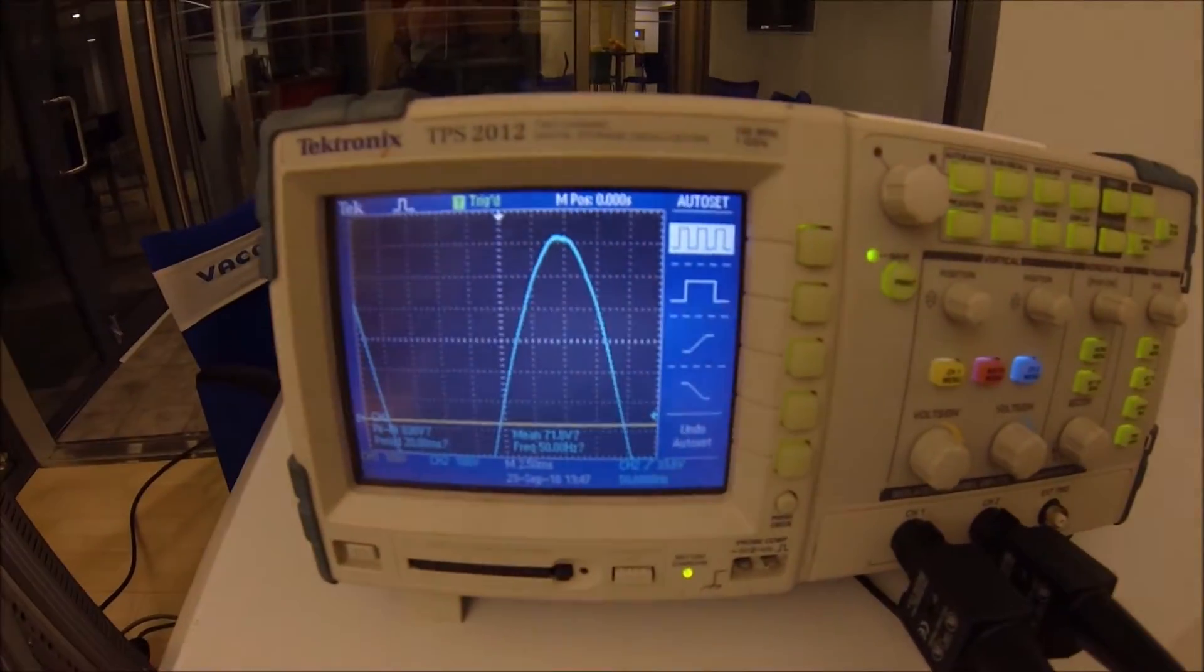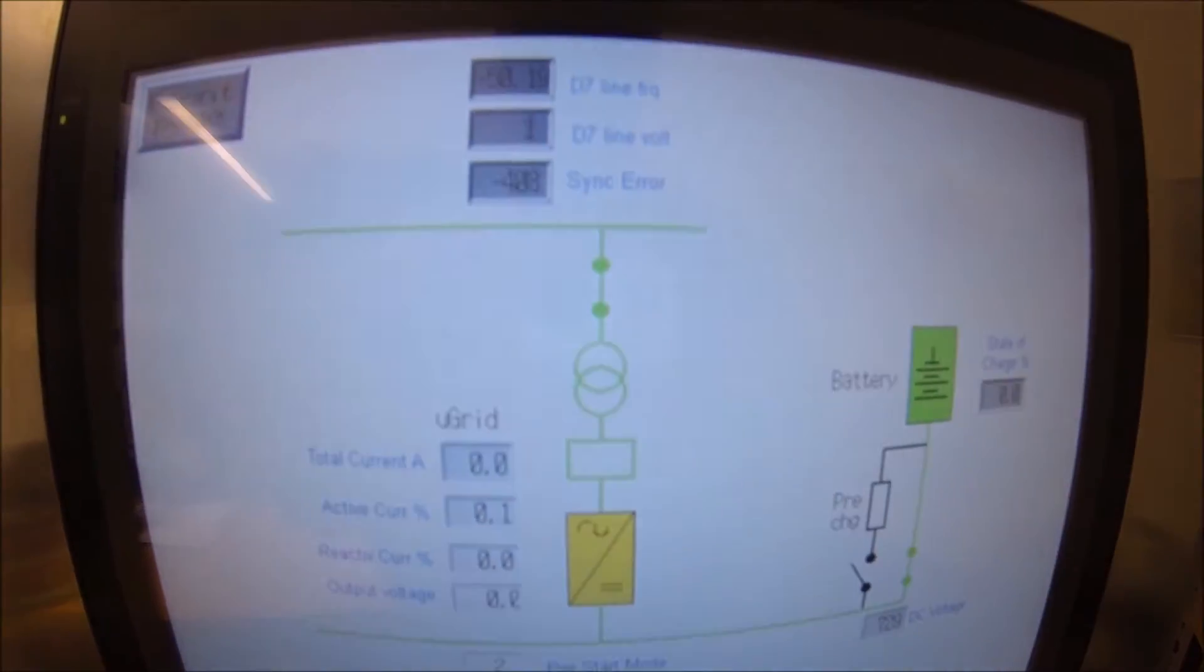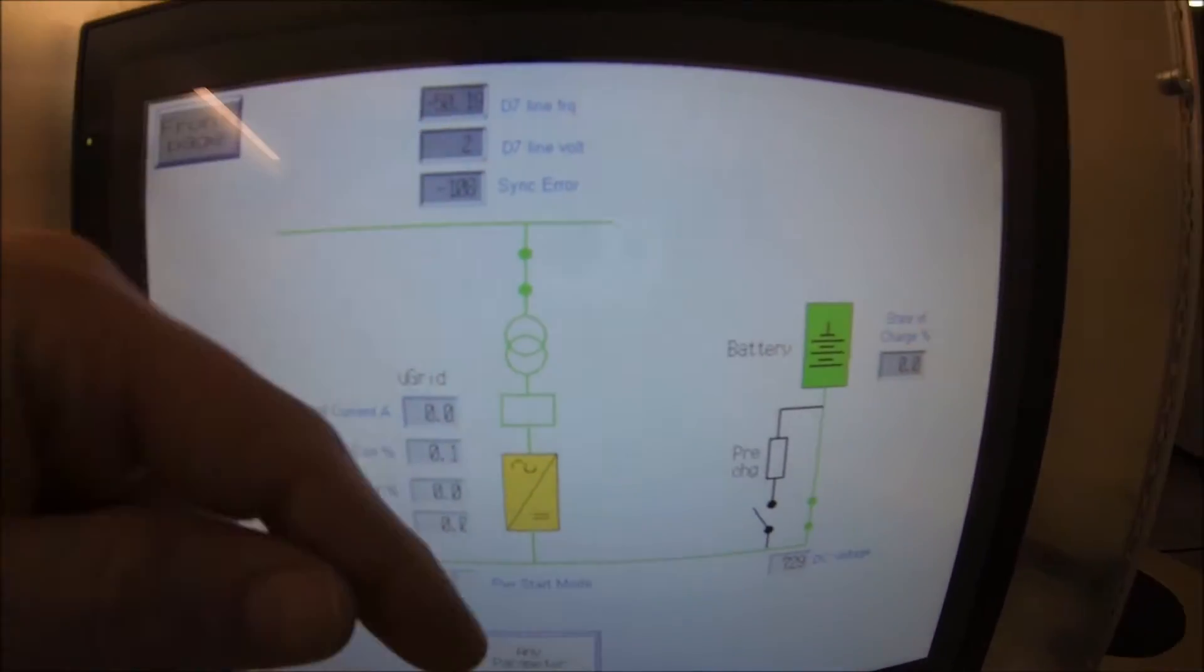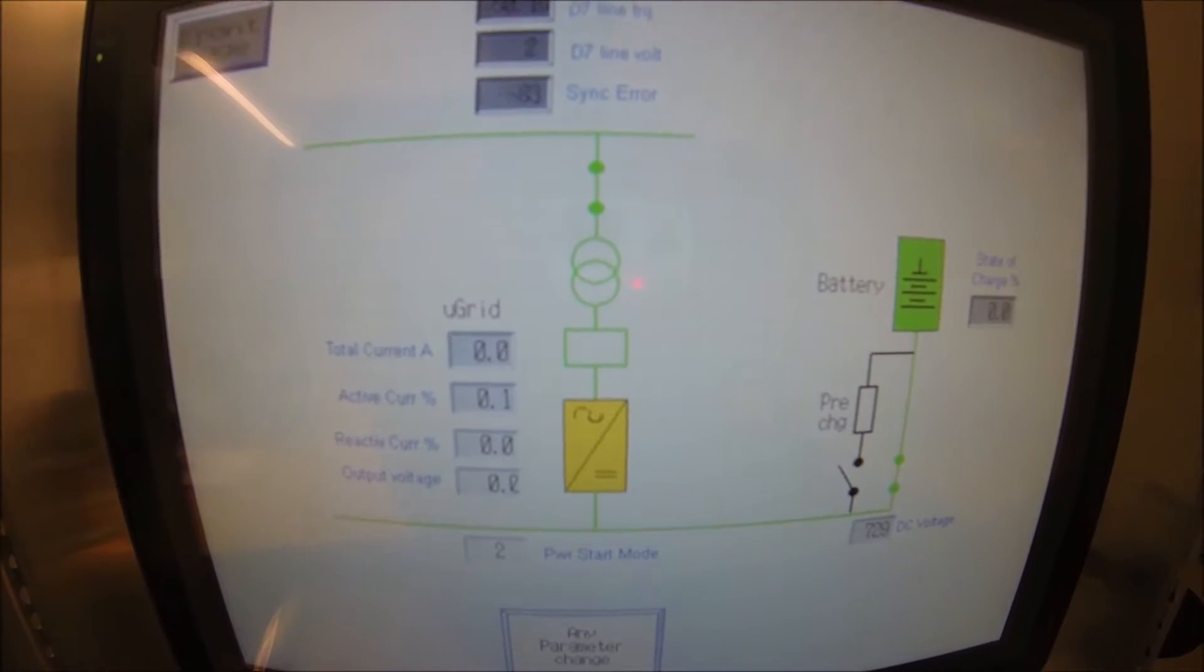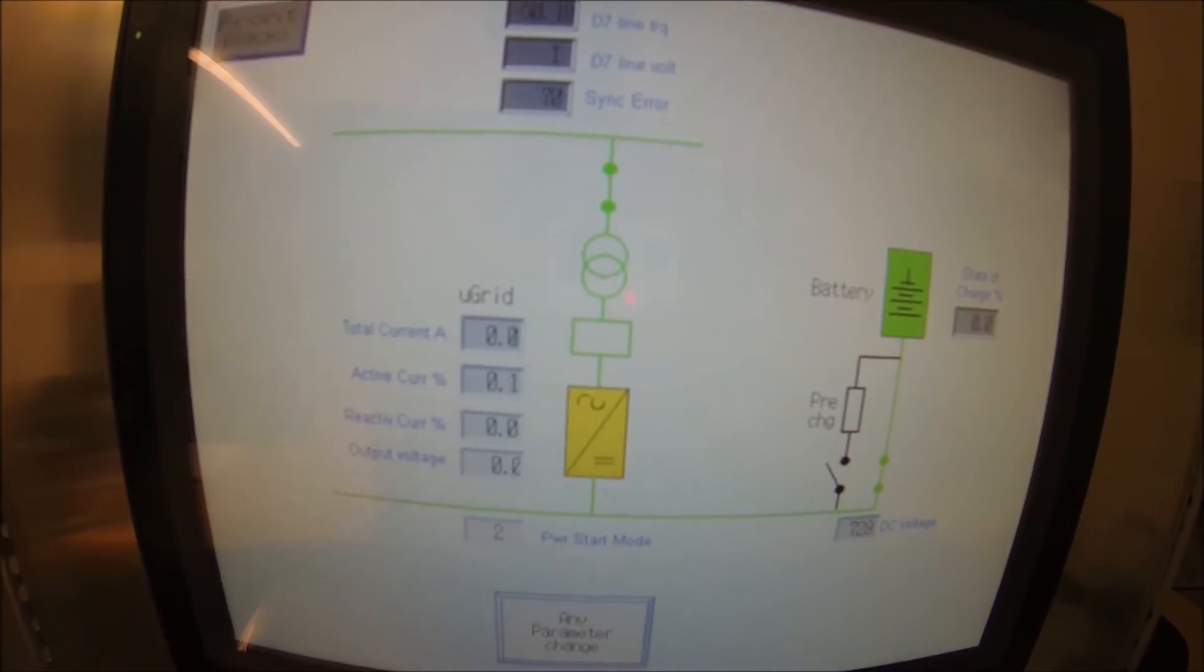I can look here at an oscilloscope. This is the city grid. If I connect to the grid now I energize my transformer via the grid. The inrush had to come from the city. They don't always like that, so it's not a very delicate way of doing it.